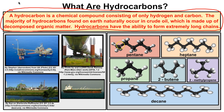For example, here we have pentane — the little black balls represent carbon, the white balls represent hydrogen. We also have heptane, propane (which you use for a Fourth of July barbecue), two-butene, two-methylpropene, and decane. In this video we're just going to learn how to name several different types of hydrocarbons and write their chemical formulas. In a later video we'll get into more detail, including the different isomers of these hydrocarbons.